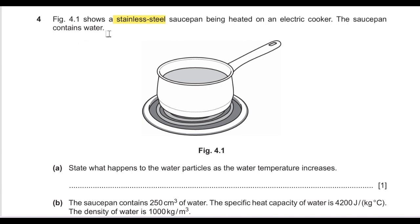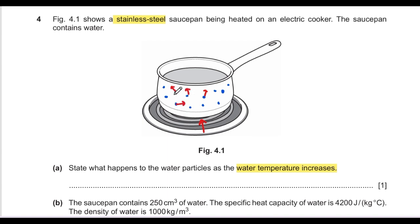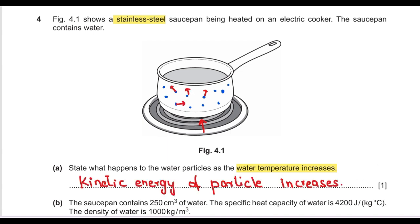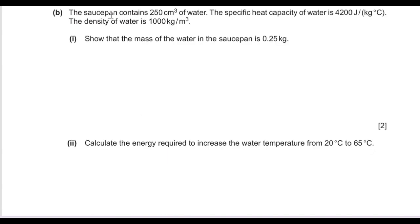Question 4: figure 4.1 shows a stainless steel saucepan being heated on an electric cooker containing water. As water temperature increases, the particles move faster — their kinetic energy increases.